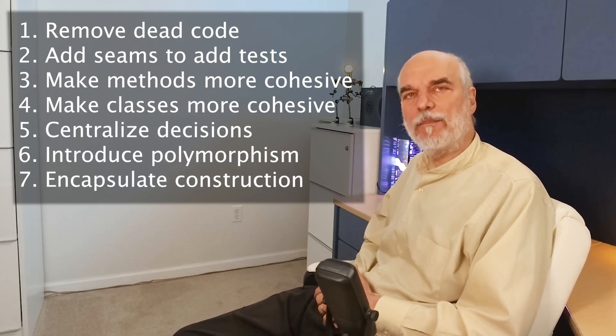Number seven: encapsulate construction. An important part of making polymorphism work is based on clients using derived types through a base class. Clients call sort without knowing which type of sort they're using. Because we want to hide from the client the type of sort that they're using, the client can't do the instantiation of the sort. So we give the sort object the responsibility of instantiating itself by providing a static method that invokes new on itself.